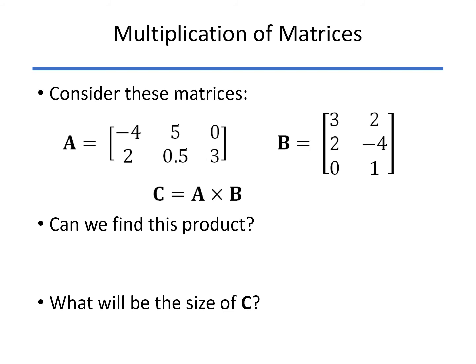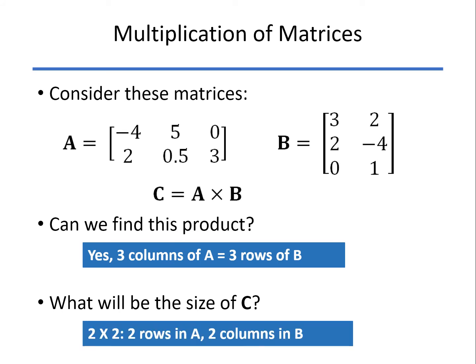If we look at these two matrices here, A and B, can we find A times B? Well, the first one has two rows, three columns. The second one, three rows, two columns. Yes, you can multiply those two together. The size of that will be a 2 by 2—the number of rows in A and the number of columns in B.